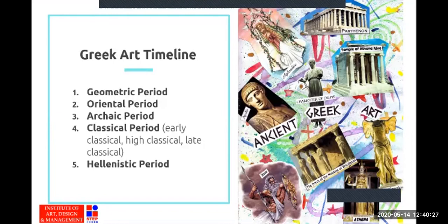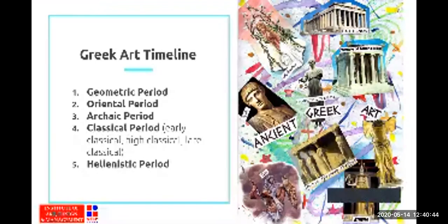Greek art timeline is divided into five different periods. The first is the Geometric period, in which the Greeks used geometric and very abstract designs in their art. After that comes the Oriental period, in which ornamentation took place — geometric styles were decorated and objects were added to the work.